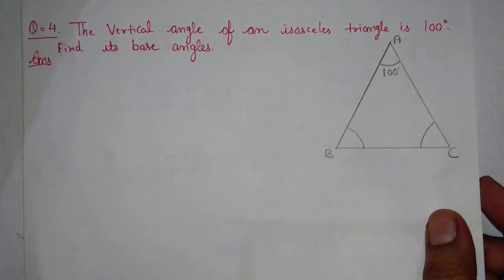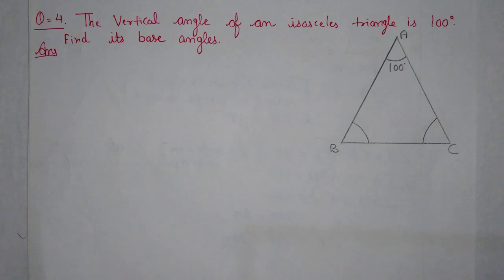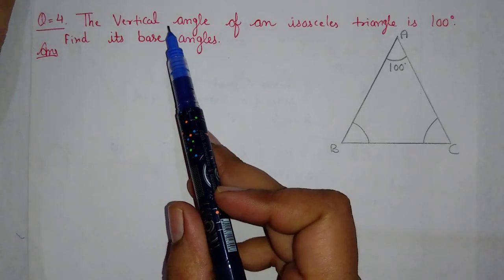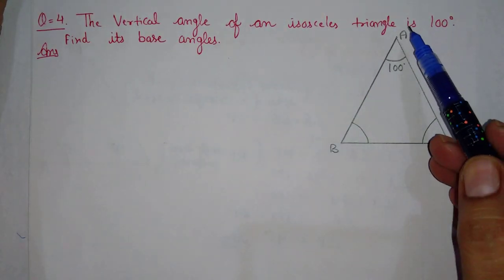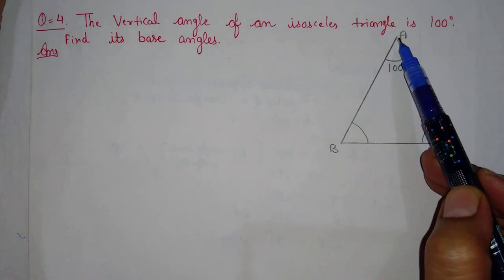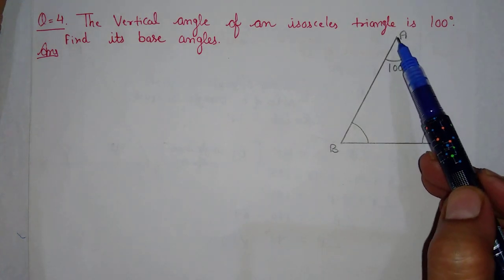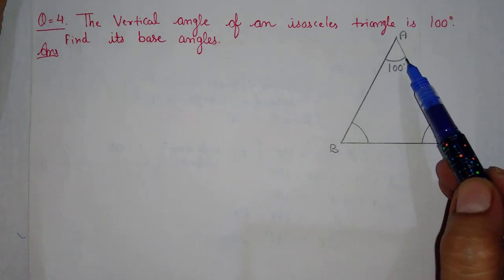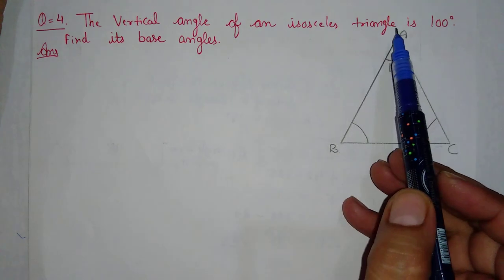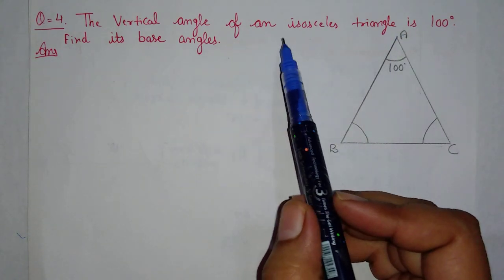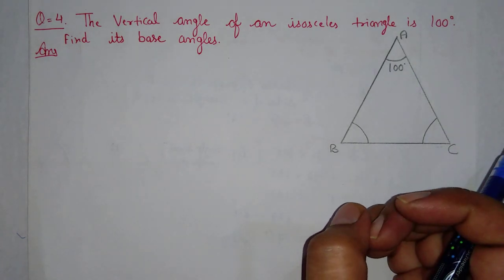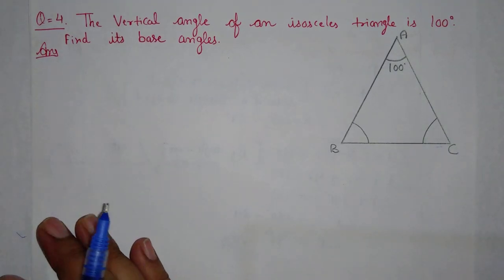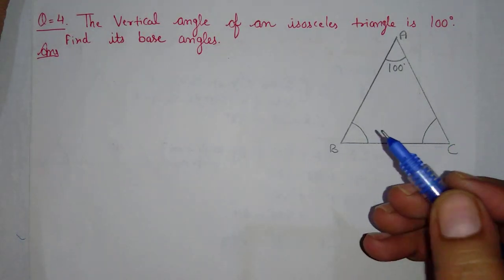Next is question number 4: the vertical angle of an isosceles triangle is 100 degrees — find its base angles. You might wonder what 'vertical angle' is. When you draw a triangle, the angle at the top is called the vertical angle. So in triangle ABC, the top angle is 100 degrees and the triangle is isosceles — meaning two of its sides are equal.